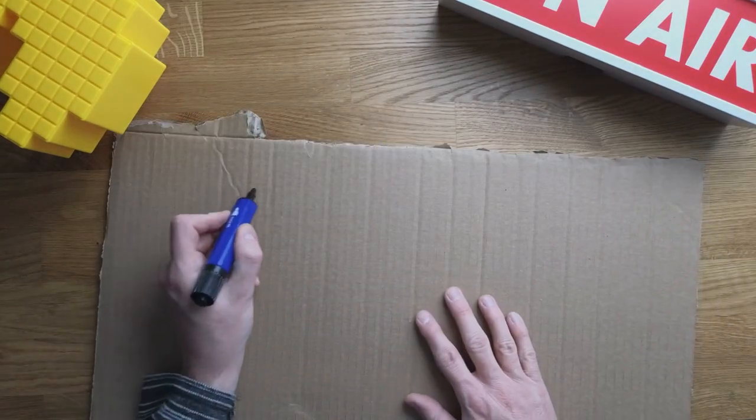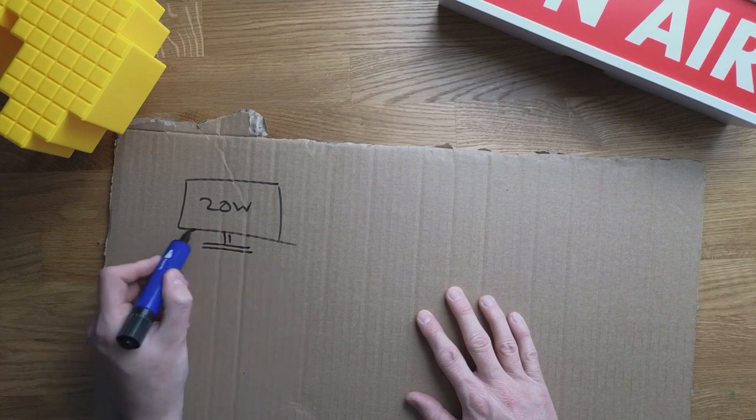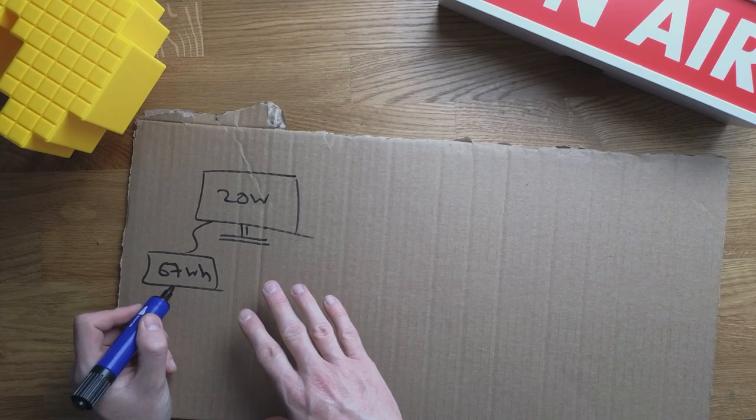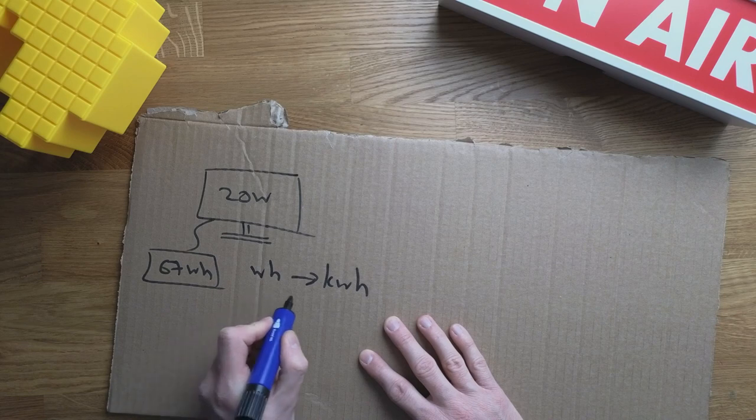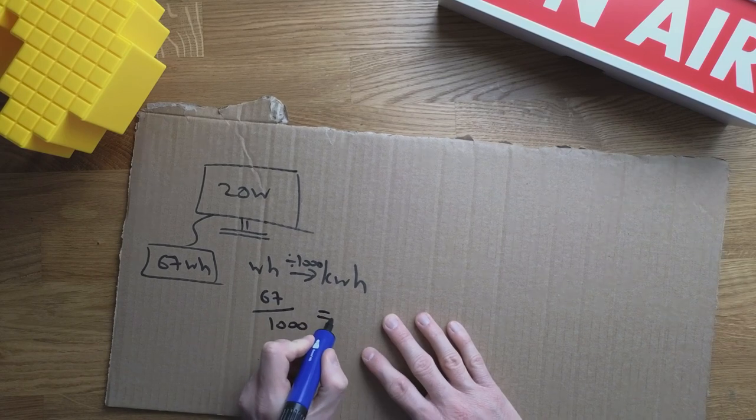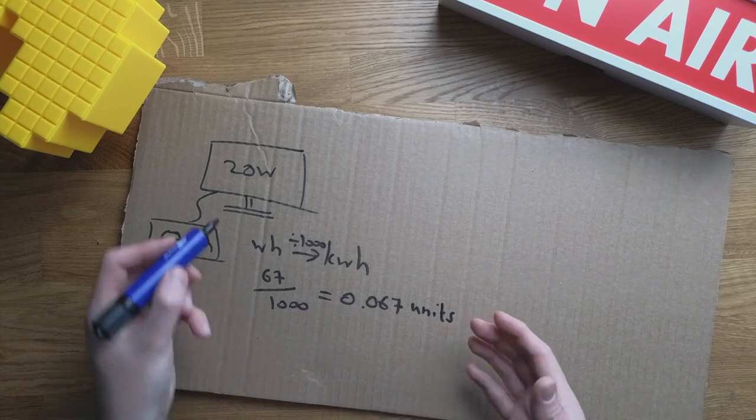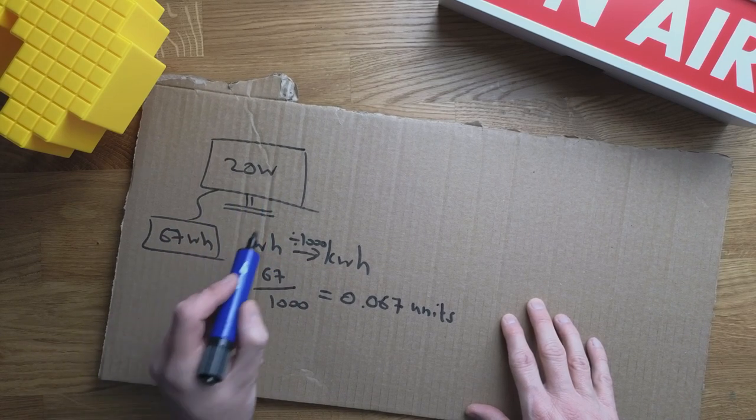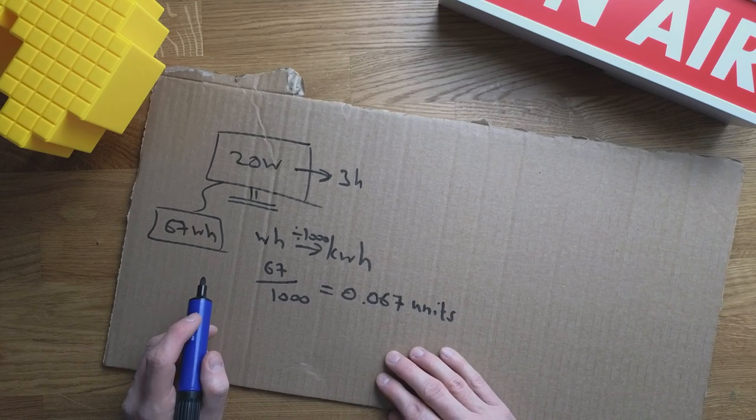I get to use my monitor, which is around 20 watts, for a certain amount of time, because it's powered off my 67 watt hour power station. If I were to use 67 watt hours from the mains, what would that cost me? First of all, we need to convert watt hours into kilowatt hours. I'm going to divide by 1000. That's going to be 67 divided by 1000, which is 0.067. That's how many units it would cost me in terms of running this monitor for the same amount of time. I could say 20 watts, 67 watt hours, it's approximately three hours runtime.